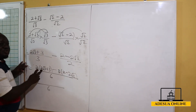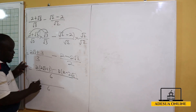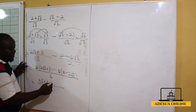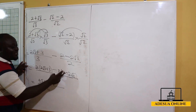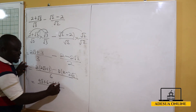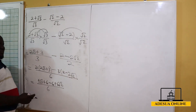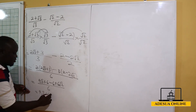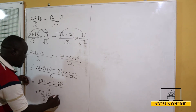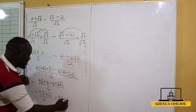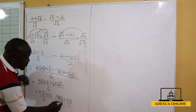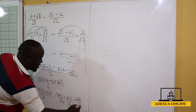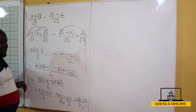Expanding with denominator 6: 2 times 2 root 3 gives 4 root 3, and 2 times 3 gives 6. Then minus 3 times 2 gives 6, and minus 3 times negative 2 root 2 — negative times negative gives positive — so plus 6 root 2. The middle terms 6 minus 6 equal zero. This gives 4 root 3 plus 6 root 2 over 6, which simplifies to 2 root 3 over 3 plus root 2.